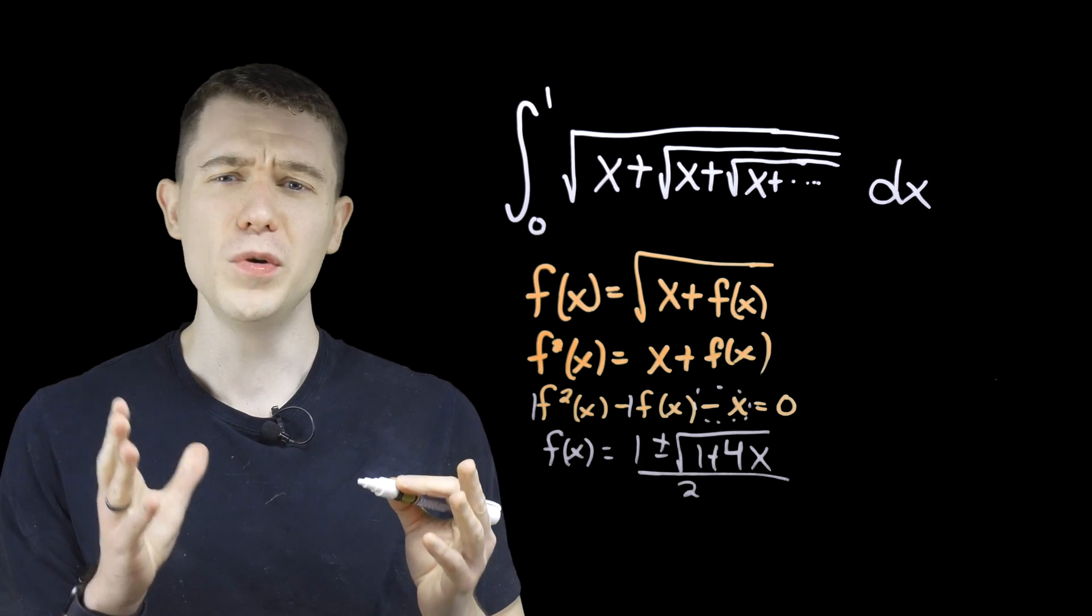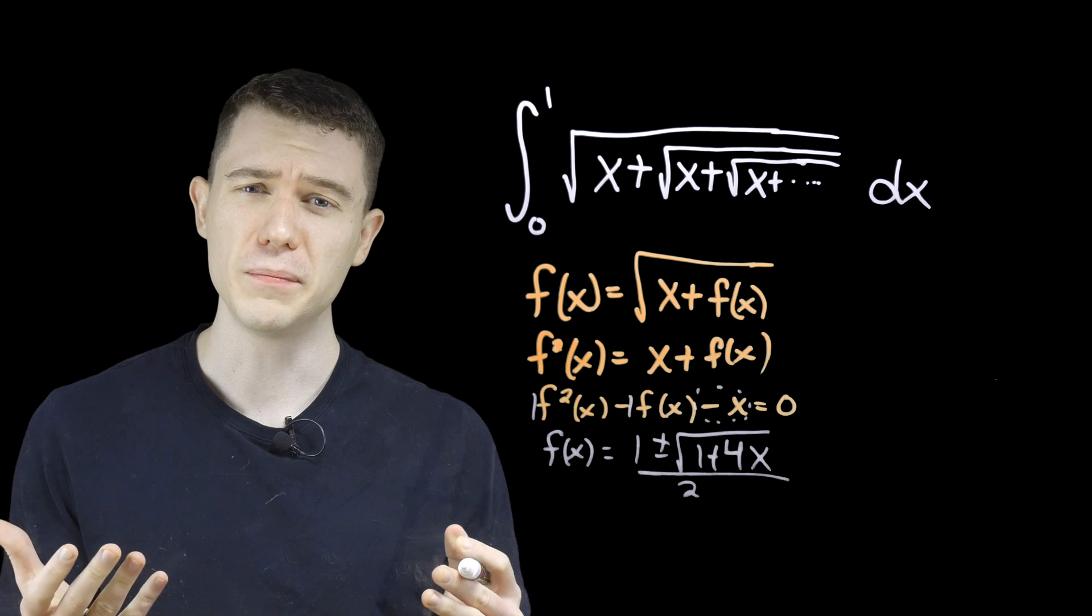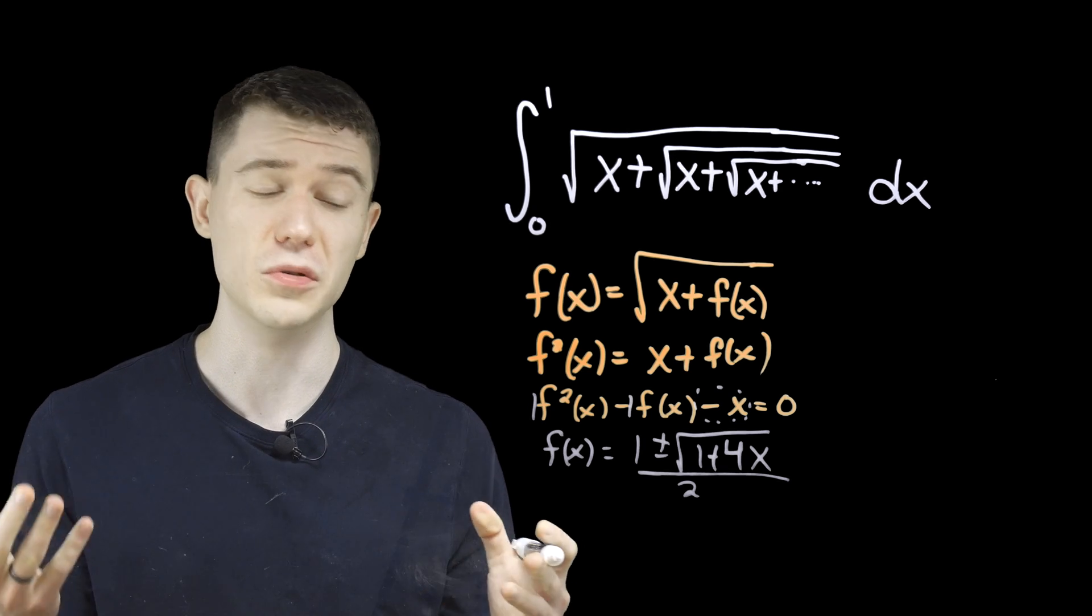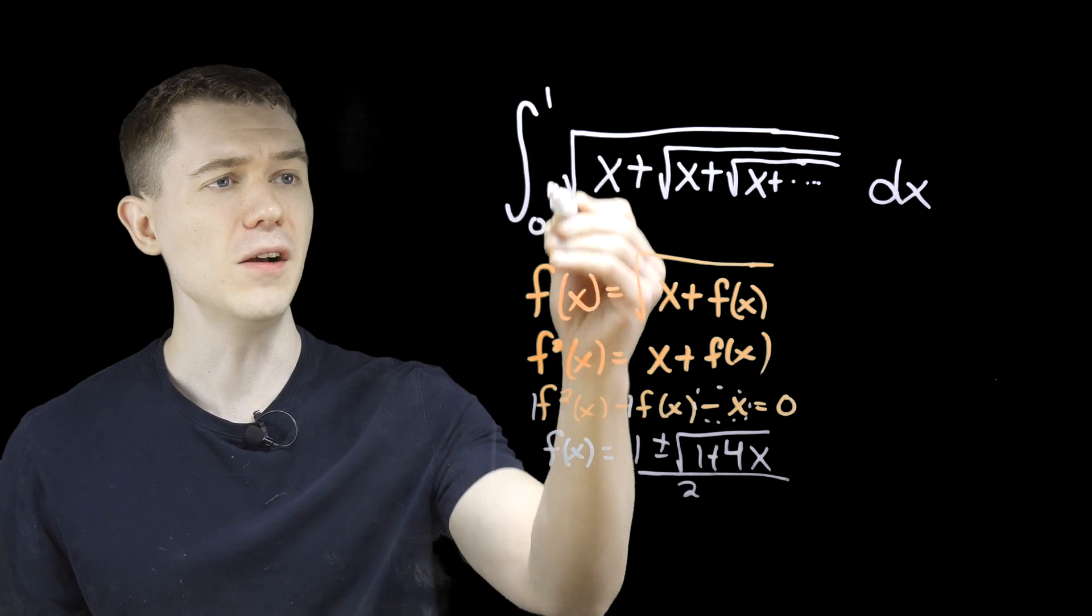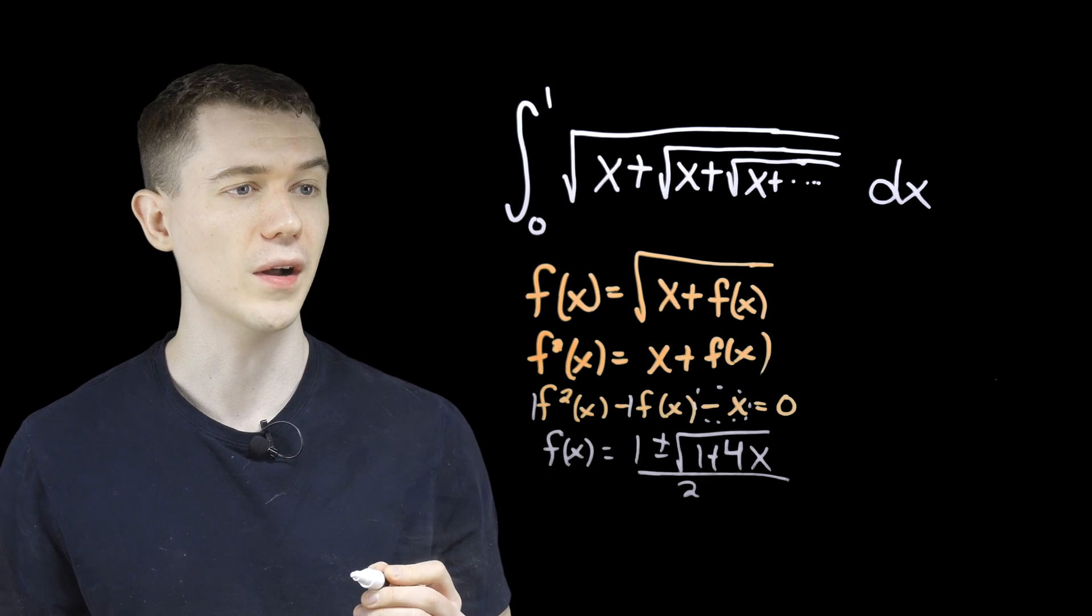Well, which one should we choose? Should we choose the plus? Should we choose the minus? Should we choose both? If you look at the integrand here, since our bounds are just between zero and one,